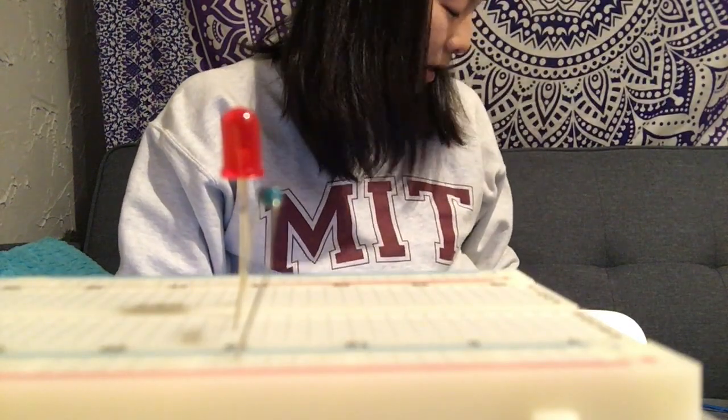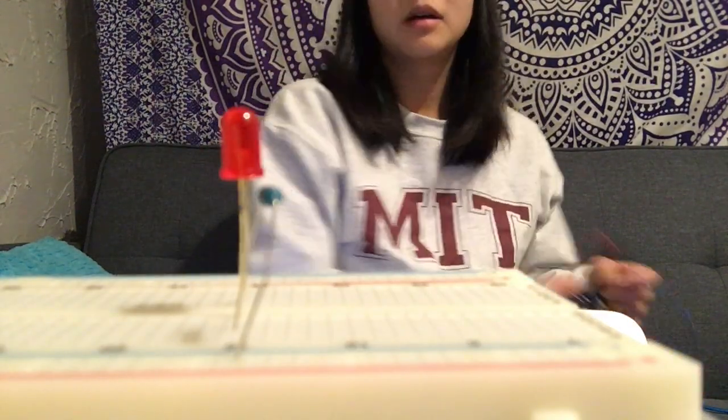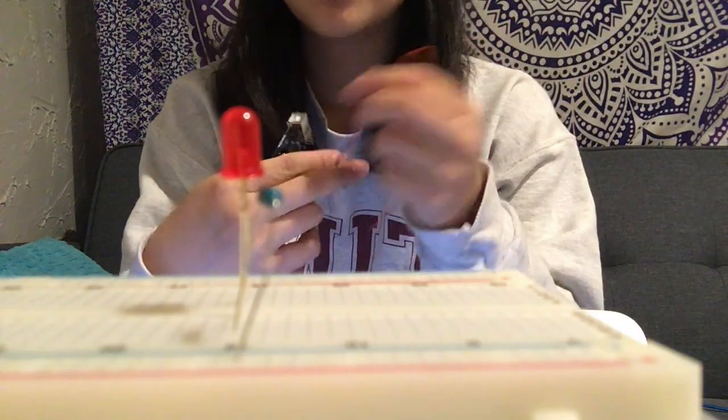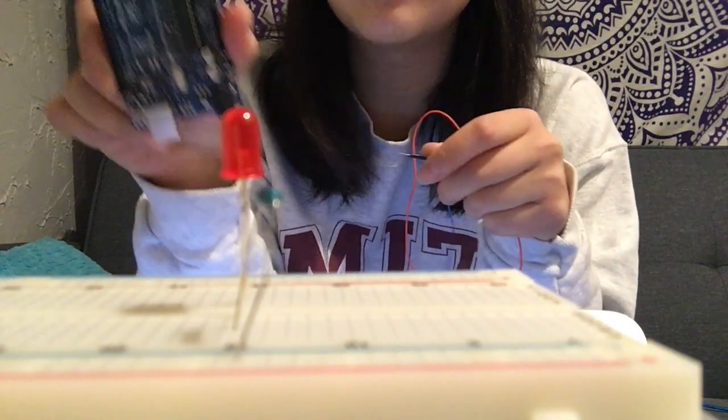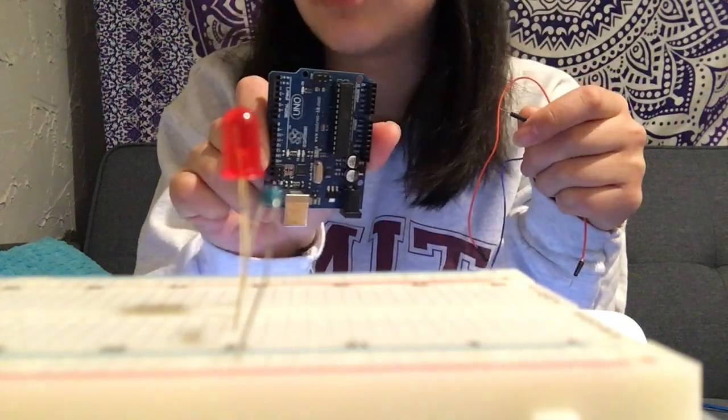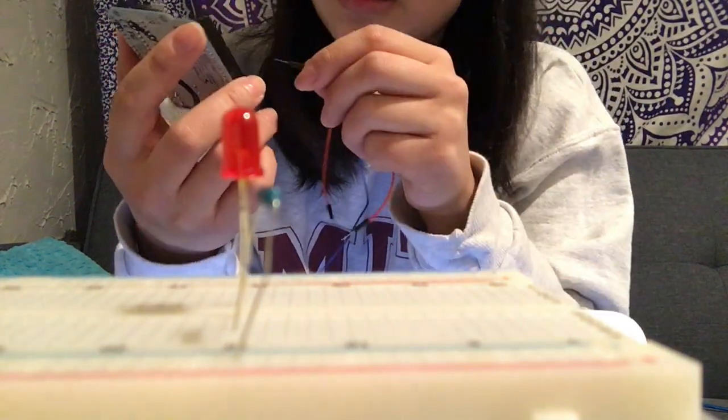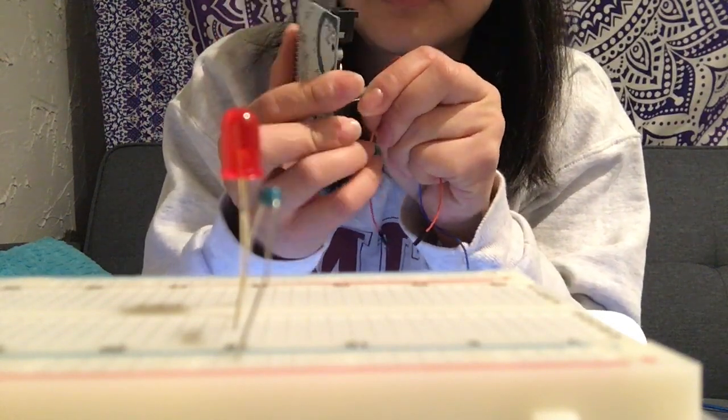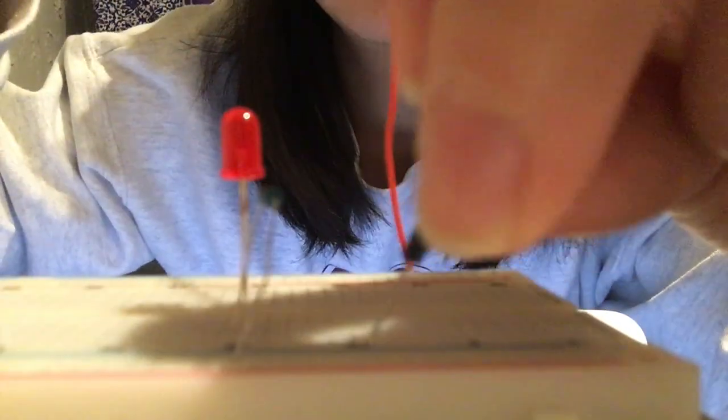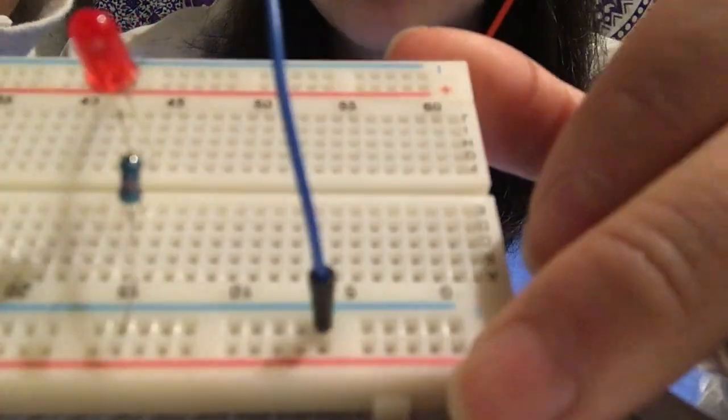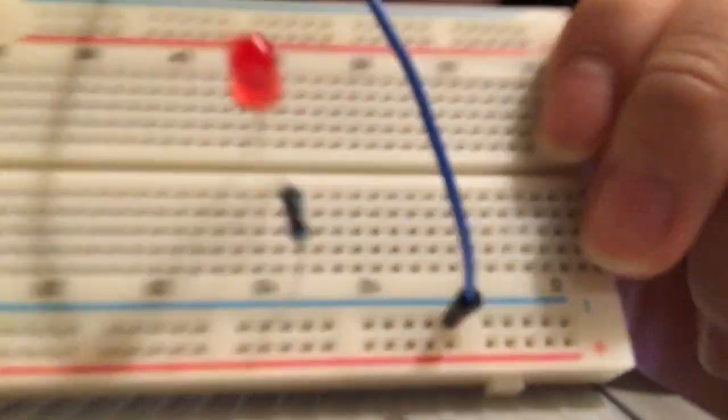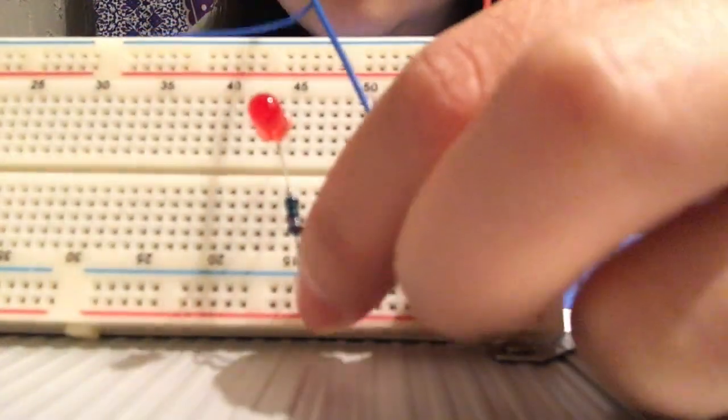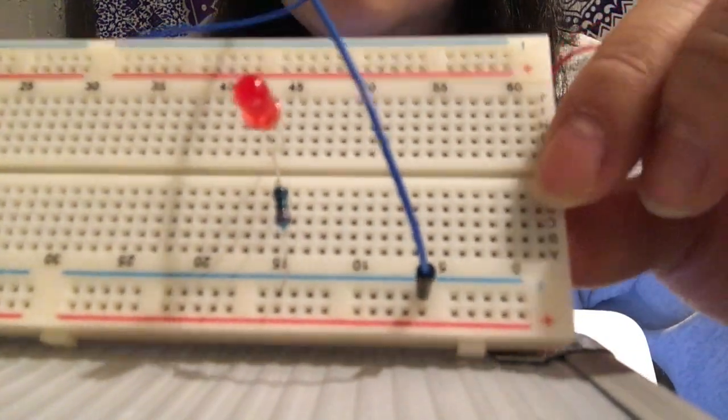Now we're gonna plug it into the Arduino. I have a blue and an orange wire here. Taking the blue wire, notice how my Arduino is not plugged in right now to the computer or any sort of power source. I'm gonna put the blue wire into one of the pins that says GND over here, and then I'm gonna plug the other side into the same vertical strip of blue that I just plugged part of the resistor into. This vertical strip of blue over here, all these boxes next to that blue line, should be grounded once I plug this in.